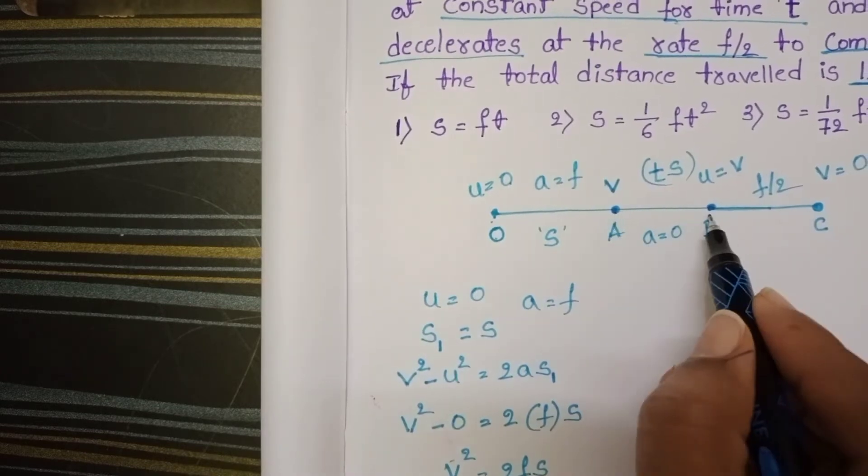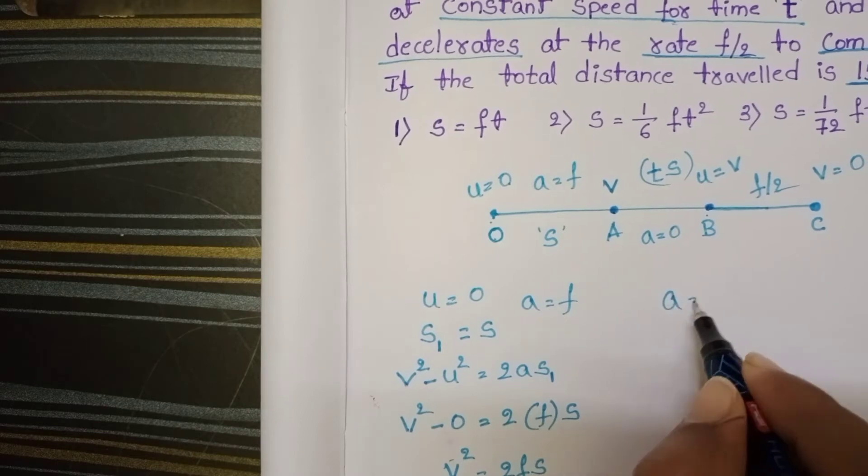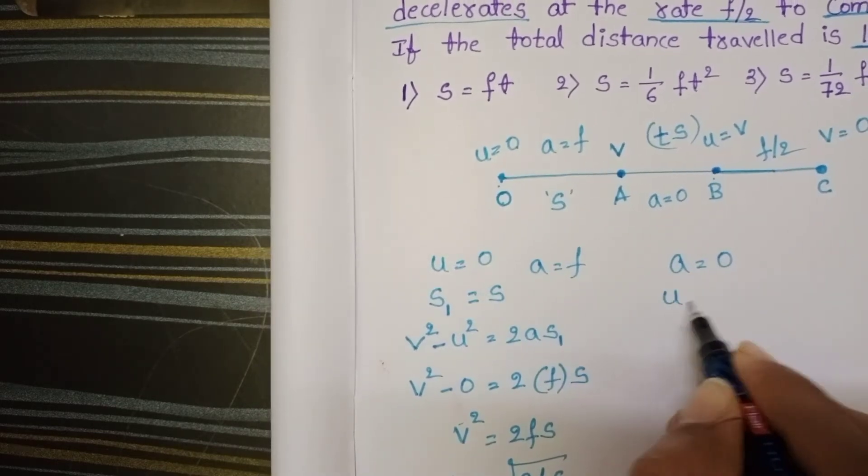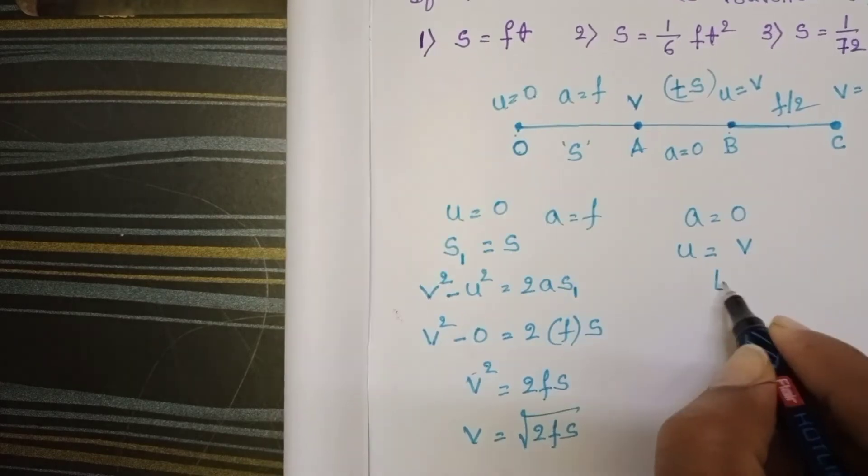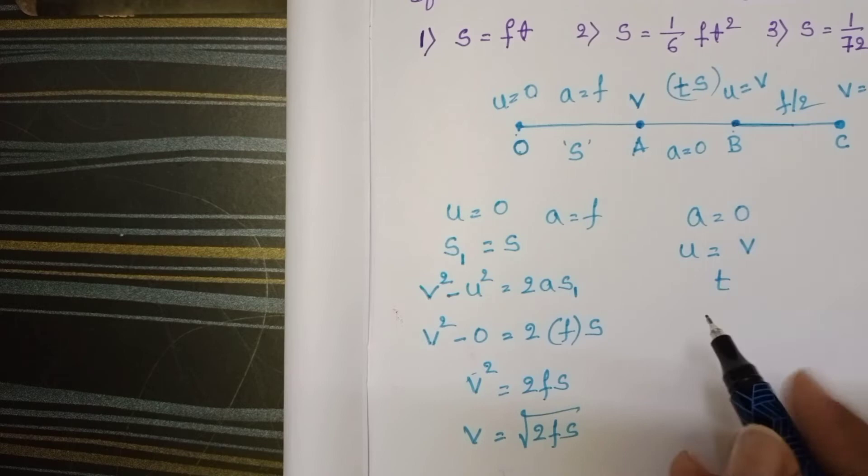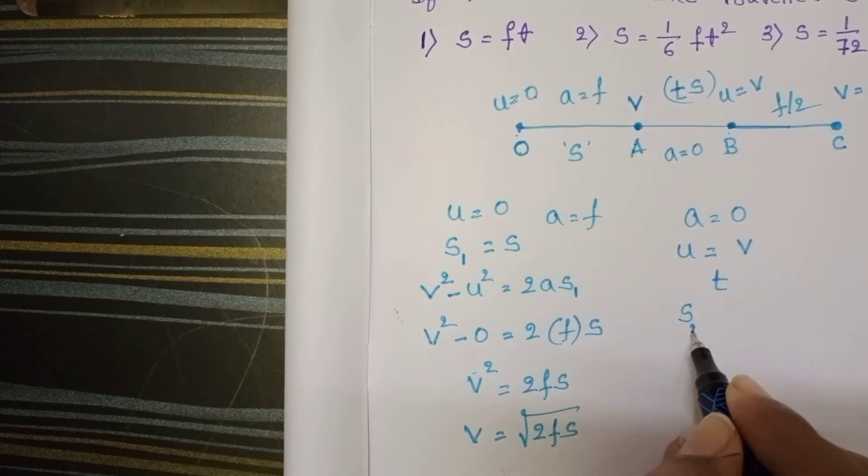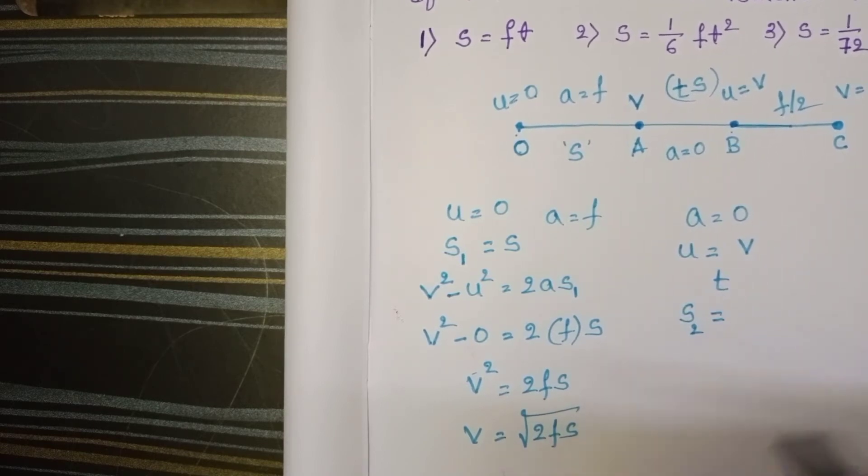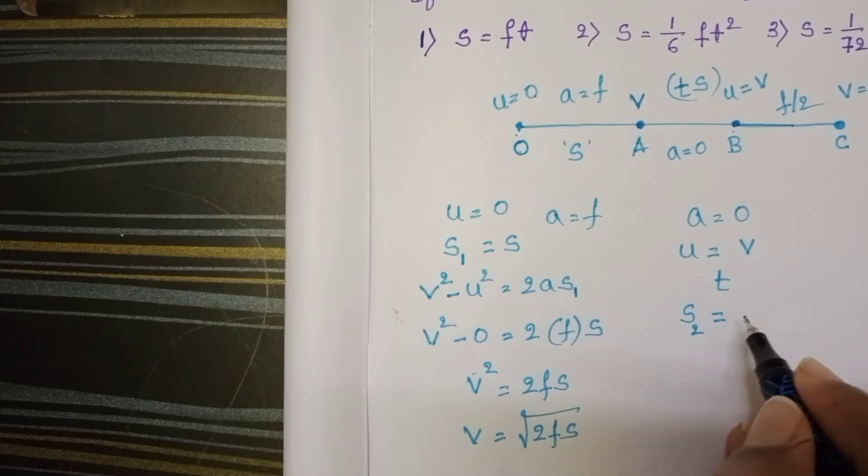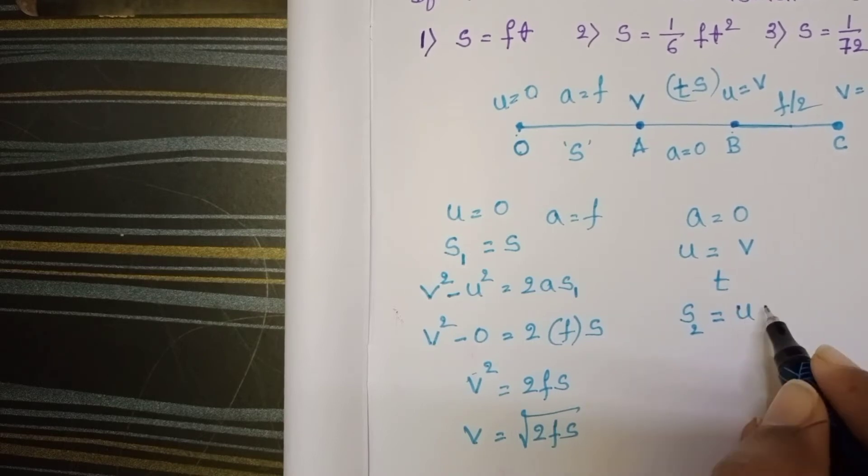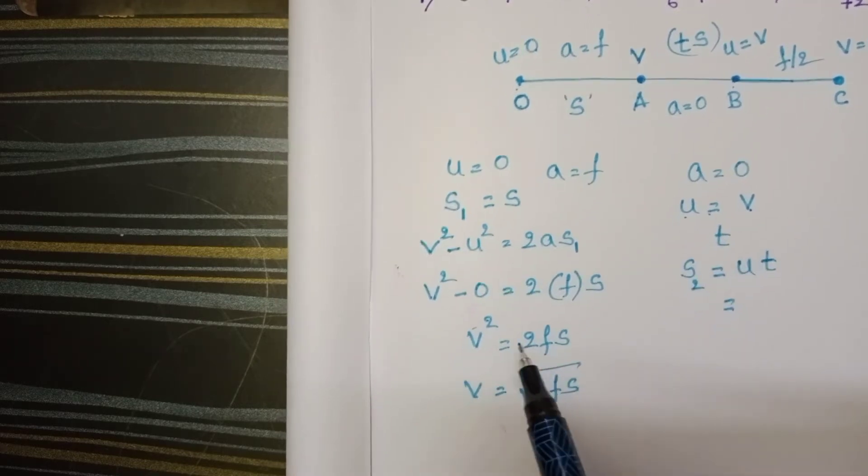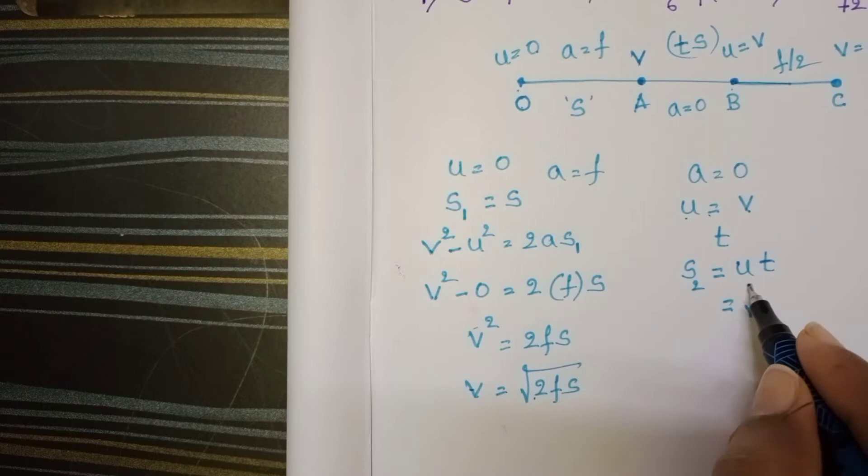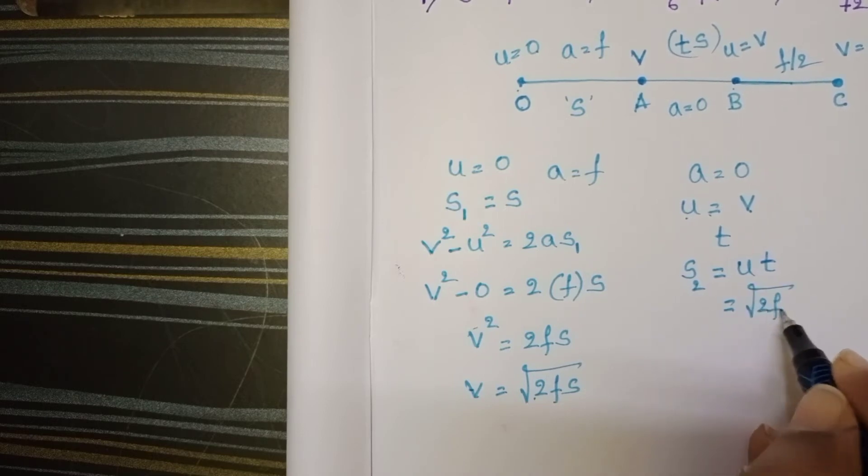Now from a to b, acceleration is 0 and initial speed is v. The time is t. Distance traveled, let it be s2. s2 equals speed times time. u equals v. We know v = √(2fs). So s2 = √(2fs) × t.